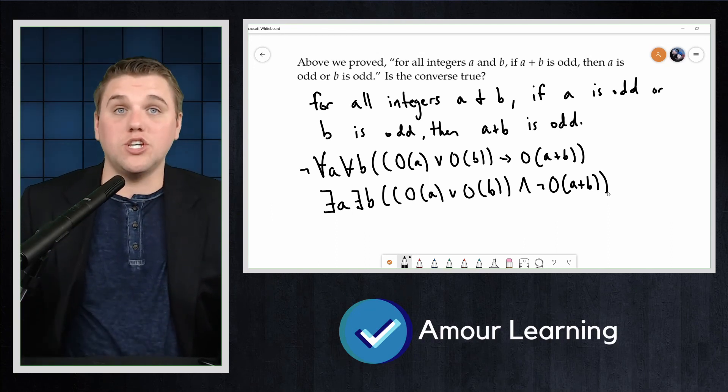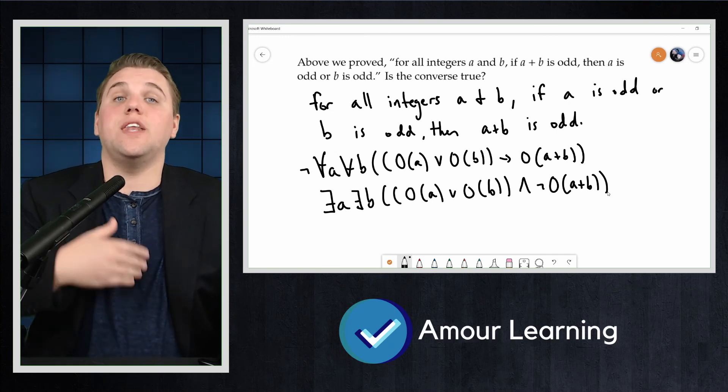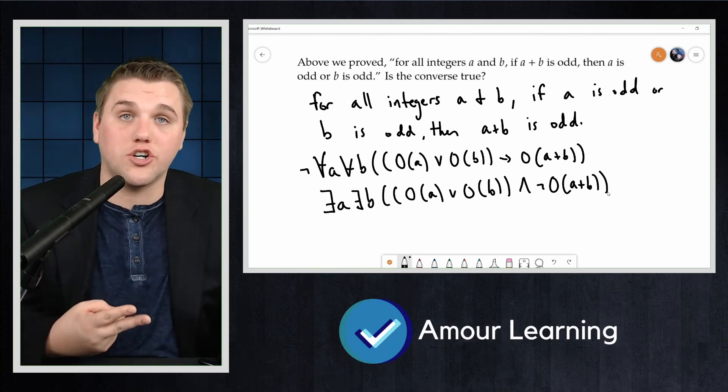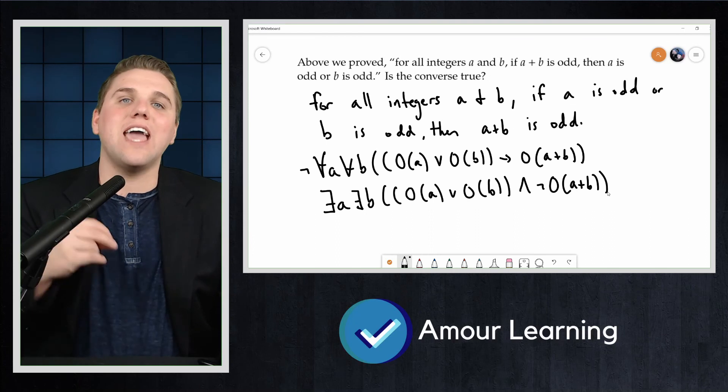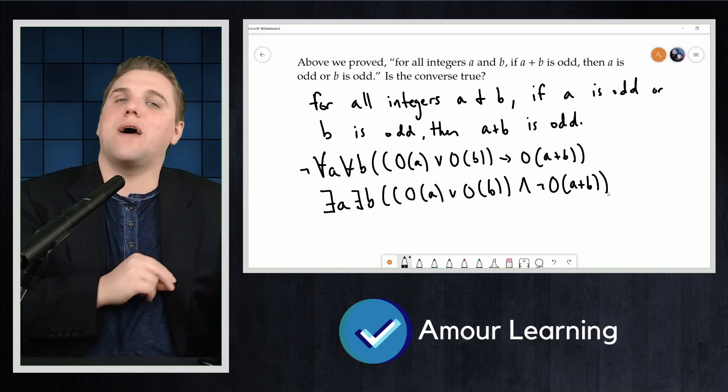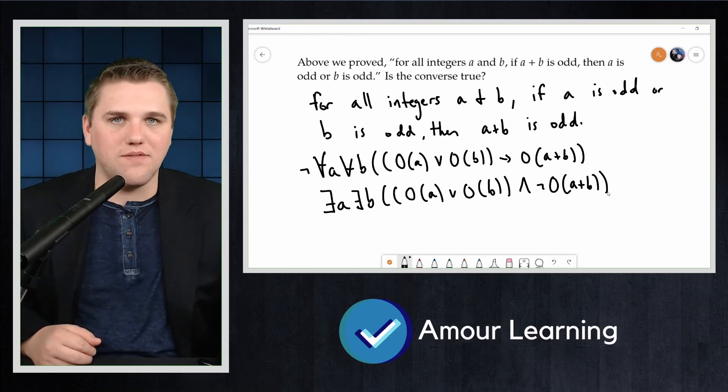Now we know what to do. To prove that the converse is false, we need to find two integers a and b, so that a is odd or b is odd, but a plus b is not odd, so even. That's easy.